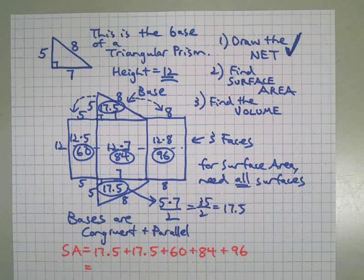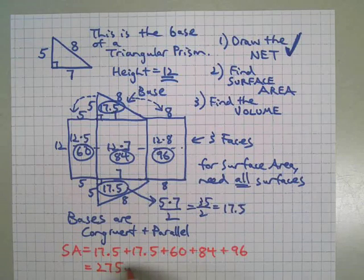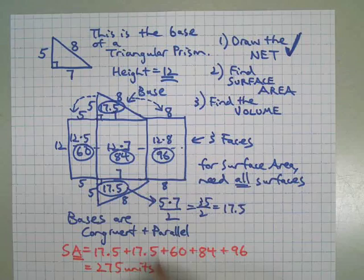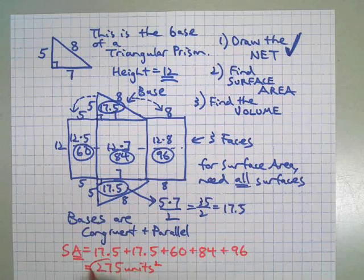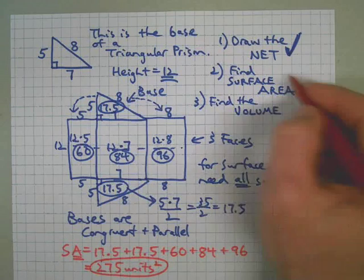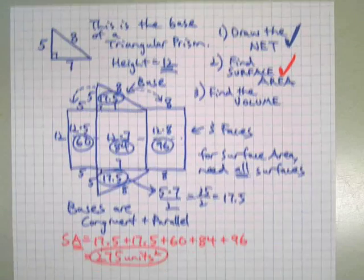I got 275 units there. Since area is two-dimensional, our answer is two-dimensional, so we have units squared. 275 on this triangular prism. So surface area done. Now we need the volume.